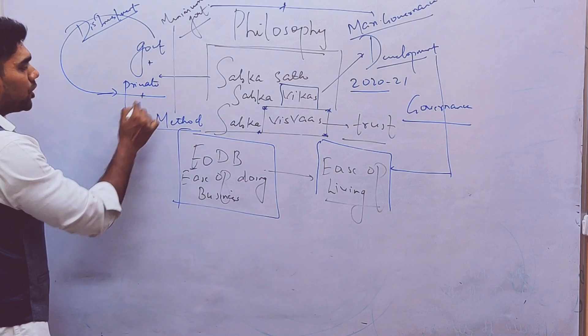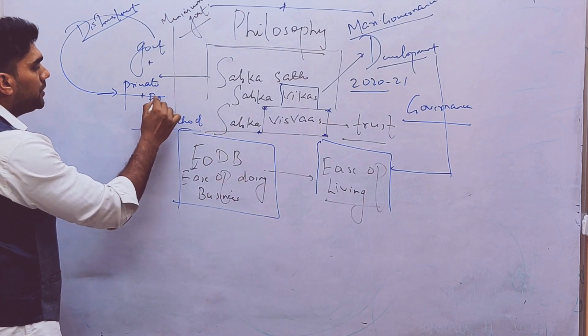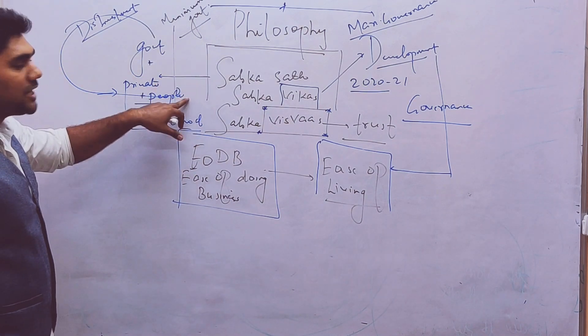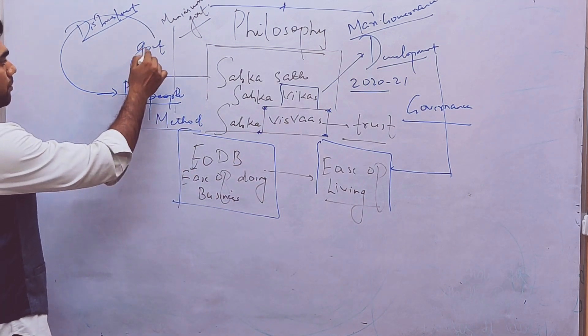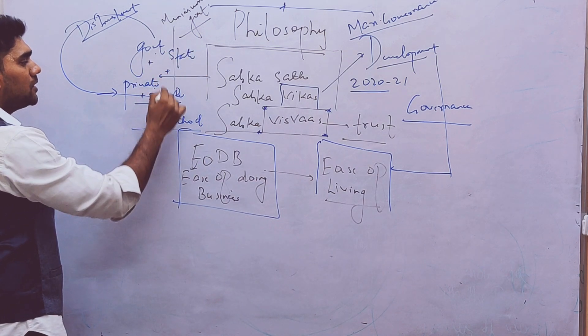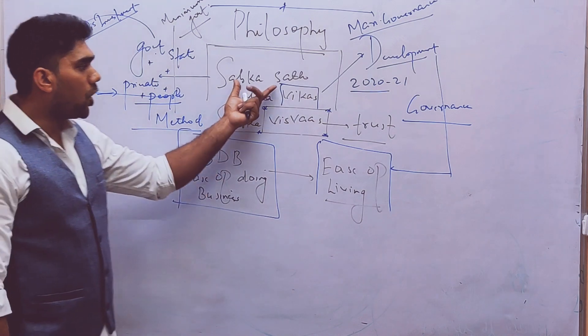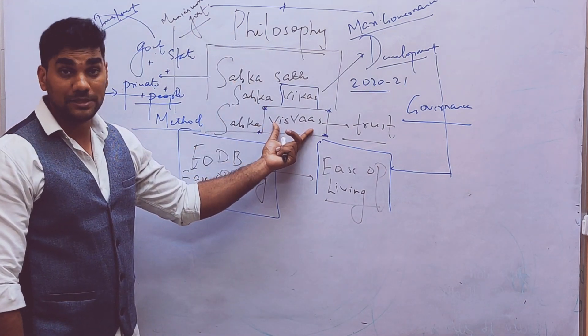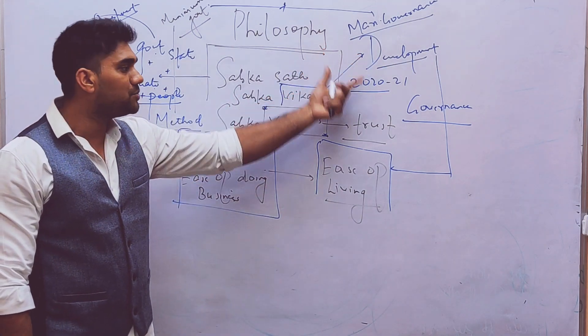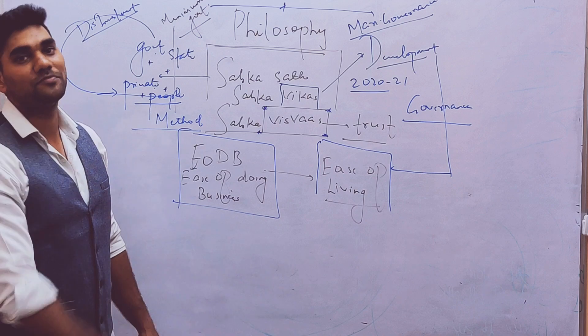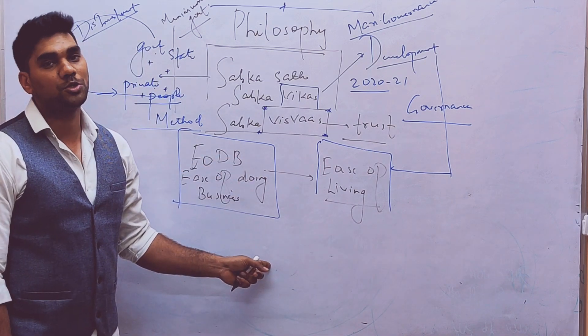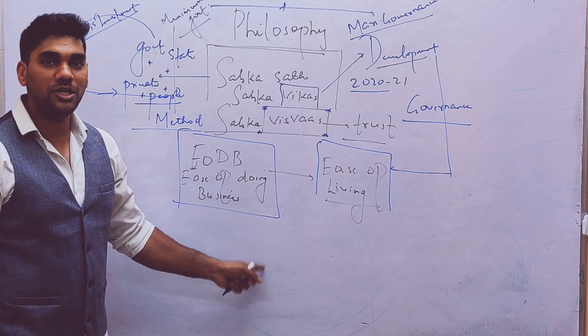So in Sabka Saath one more thing is needed - People. That means now what's the logic? Government, that means state, plus private sector plus people. They all should come together and for that we need the Vishwaas, so that we can promote the maximum governance which is called as ease of living. So this is the philosophy of the budget 2020 and 21.